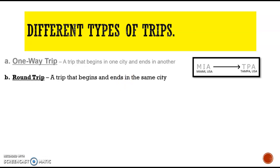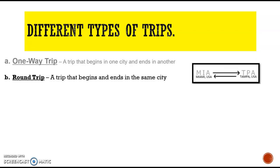Second, round trip. This is a trip that begins and ends in the same city. For example, Miami, USA going to Tampa, USA and going back on a return trip to Miami, USA.